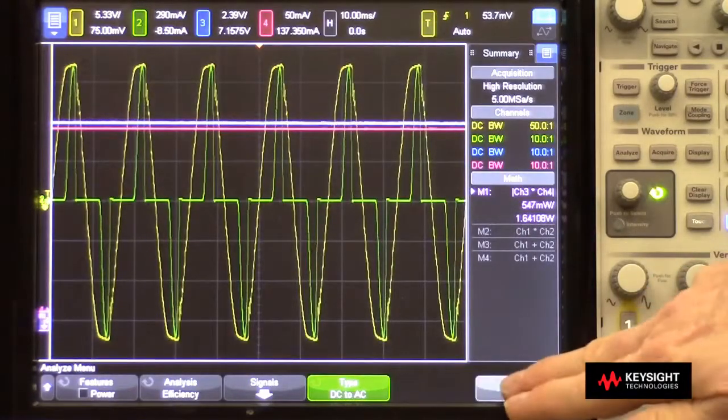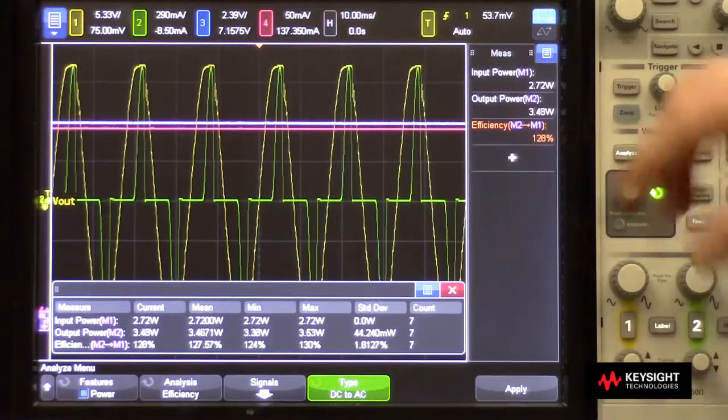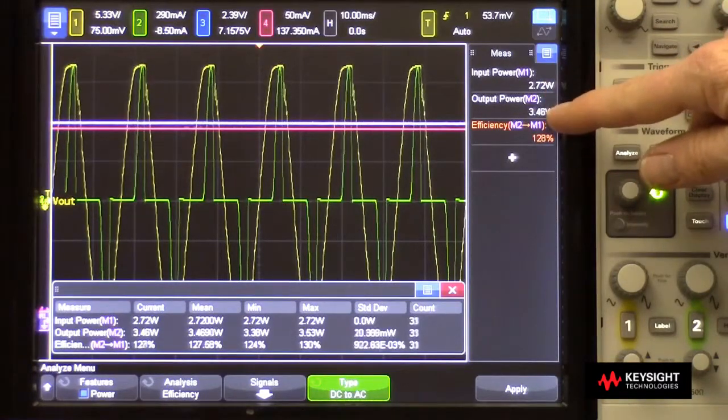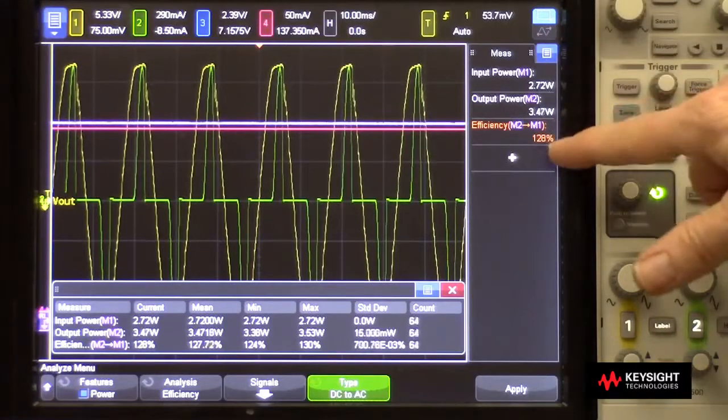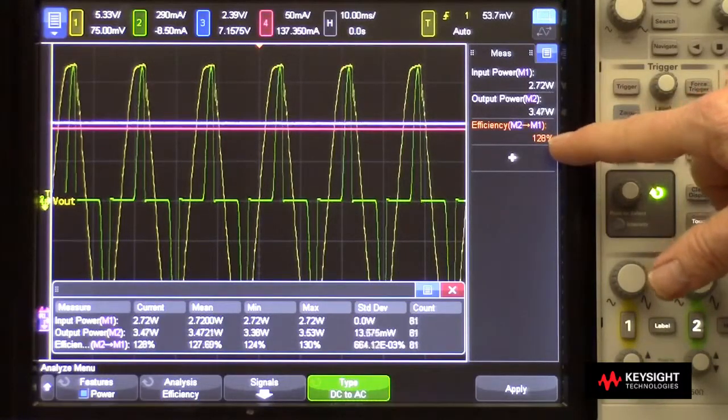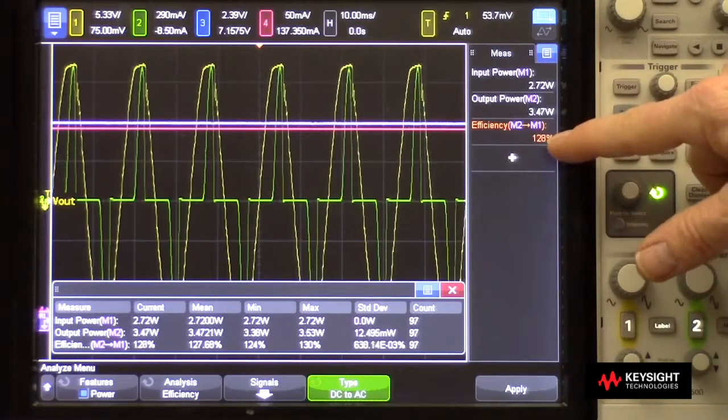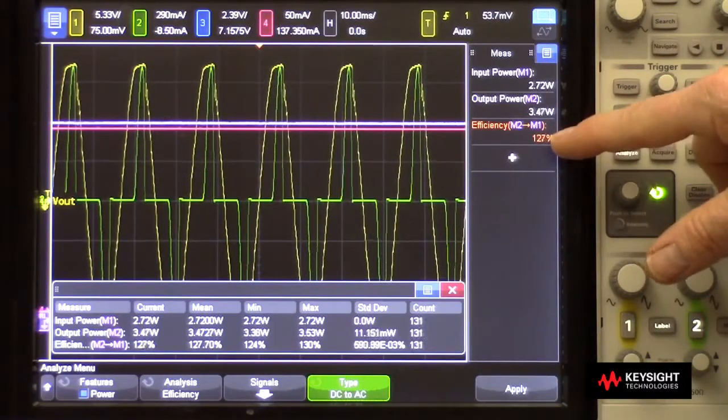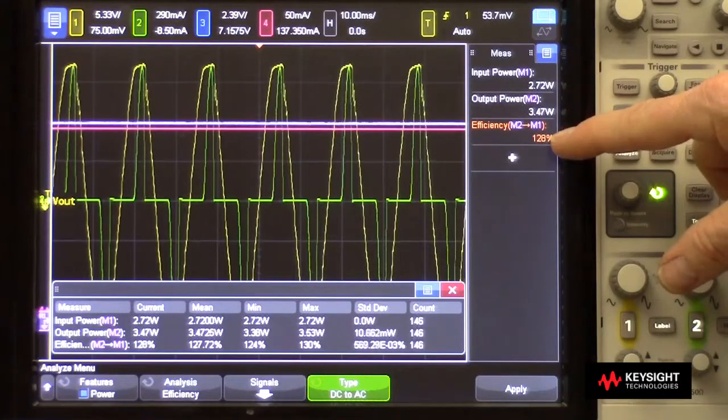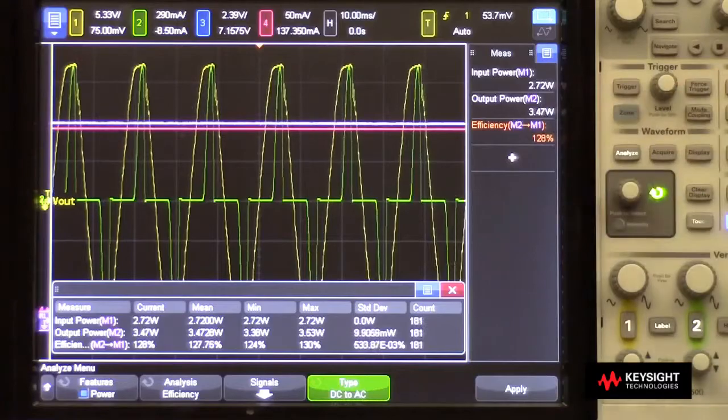And then press apply. And now you see the input and output power flipped, basically because I assigned them backwards, and the efficiency of 128%, which you know is not possible. But I don't have an inverter available for this demo, so I just flipped my DC to AC demo board around and performed the measurement that way.